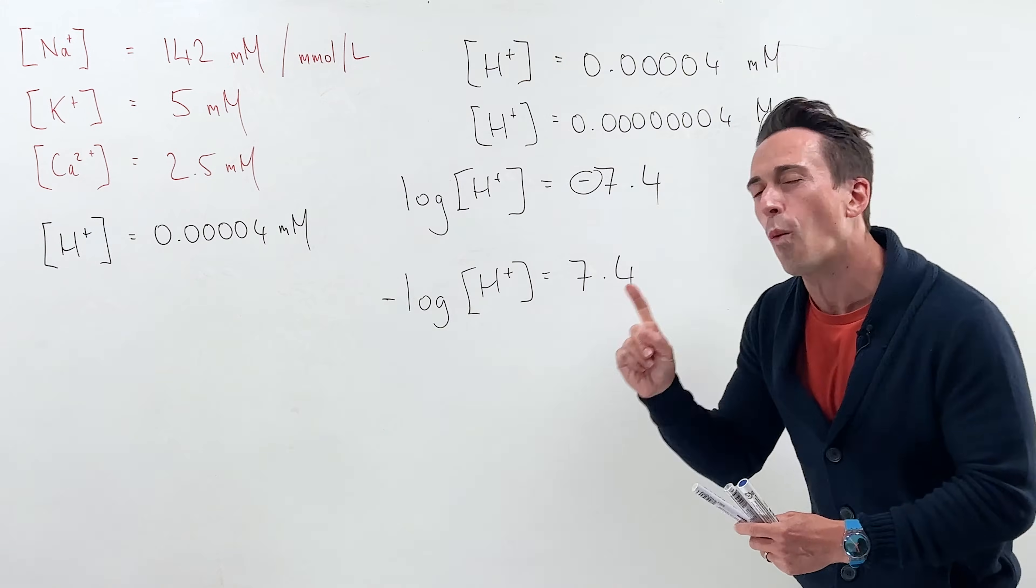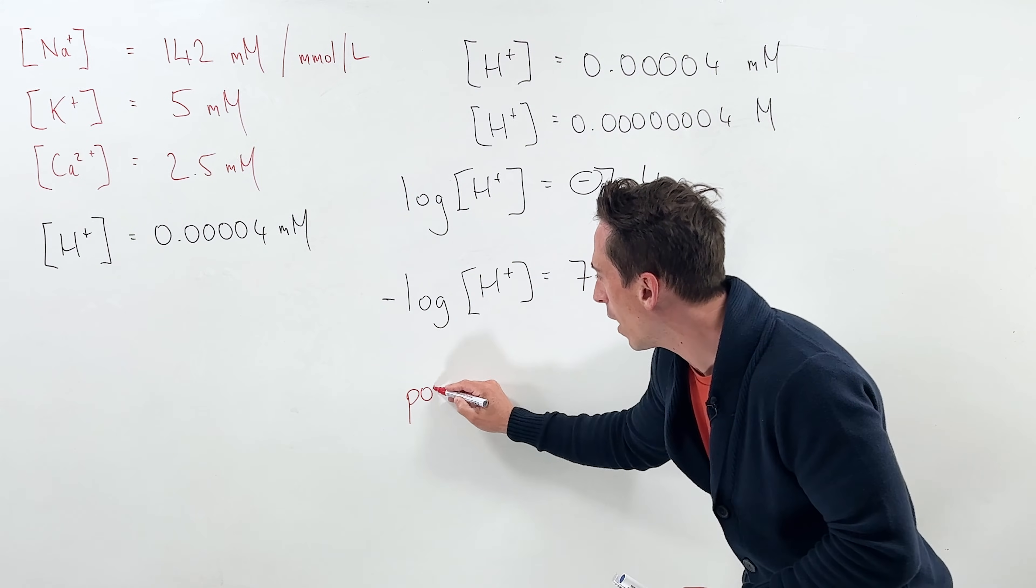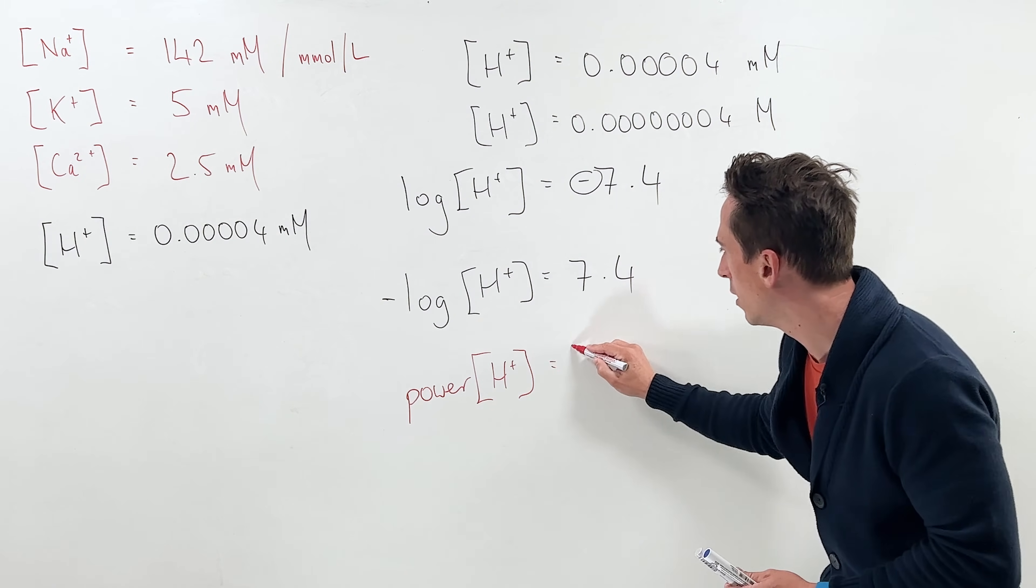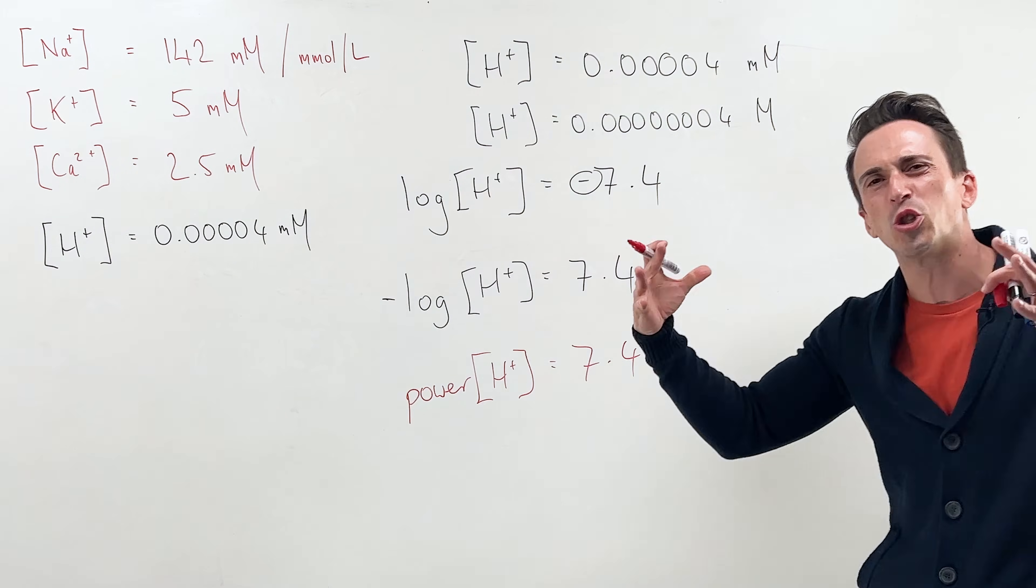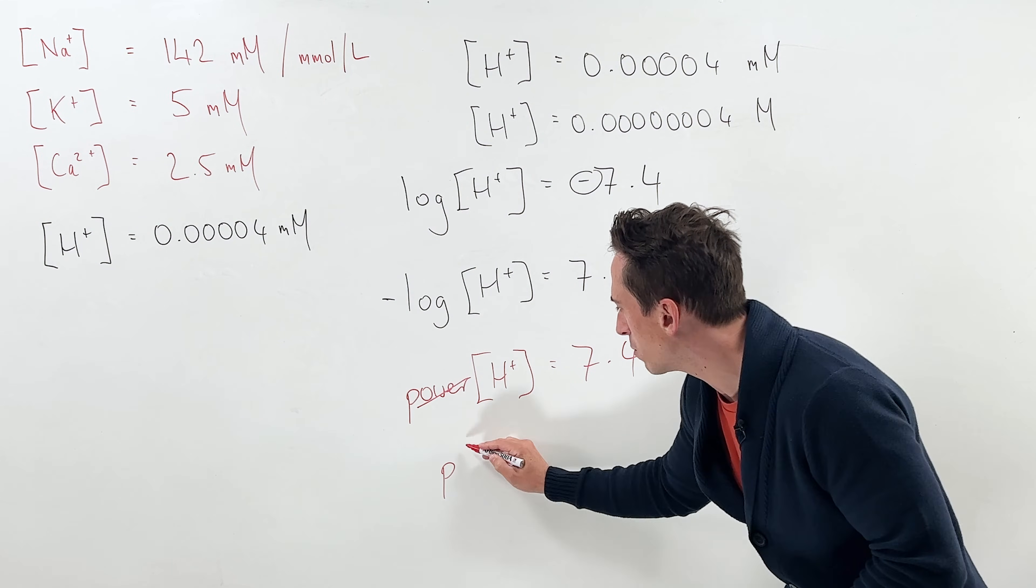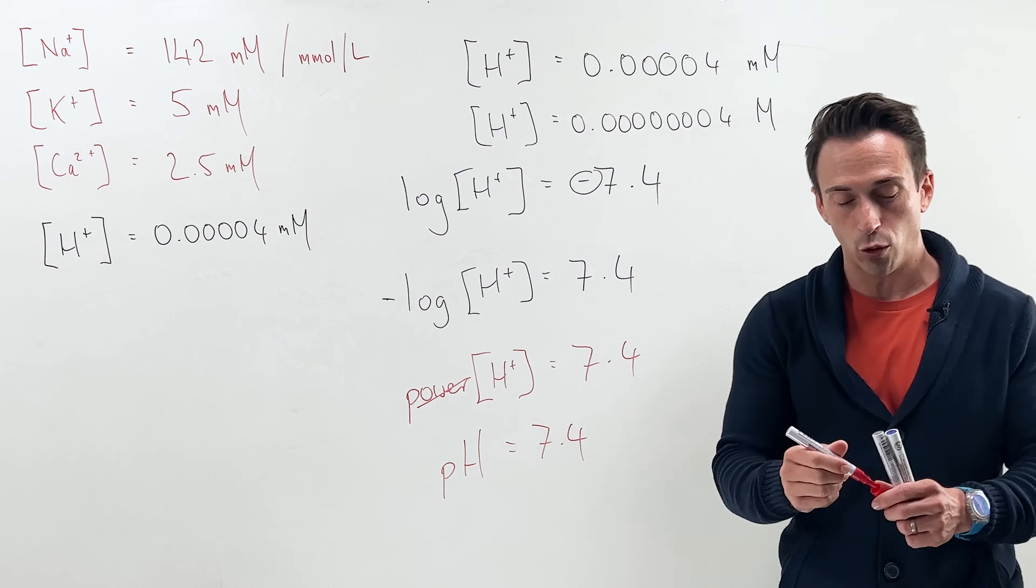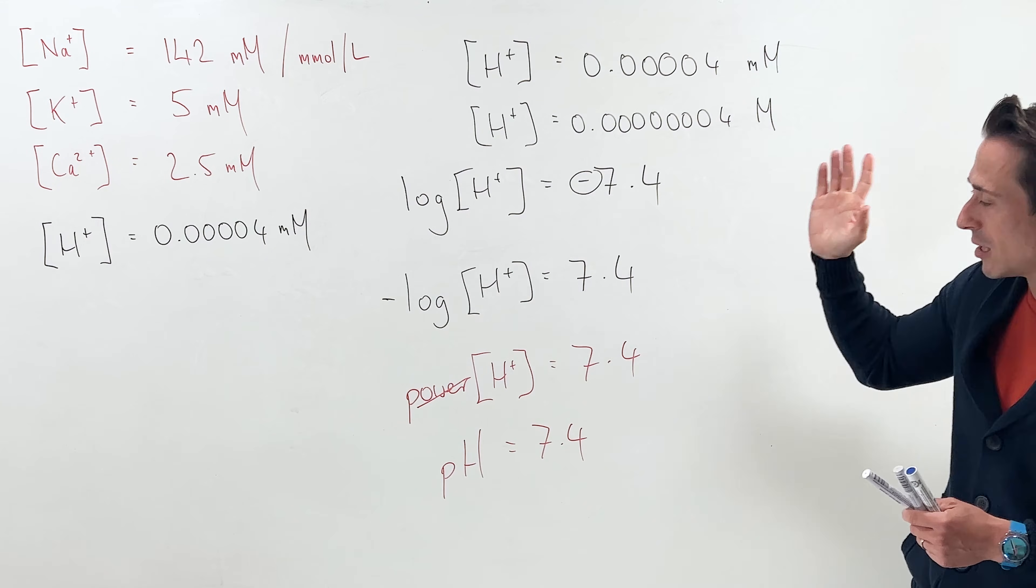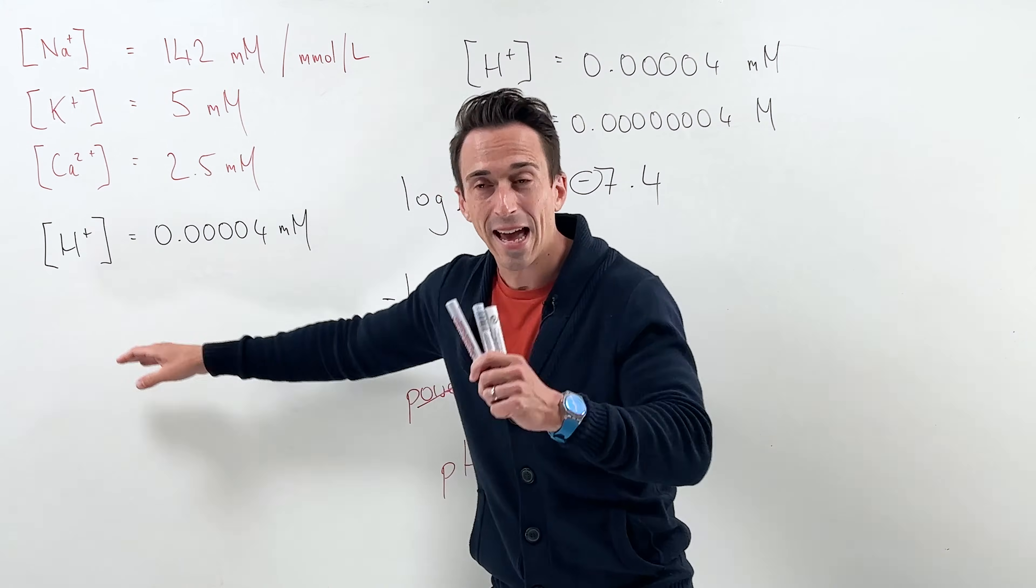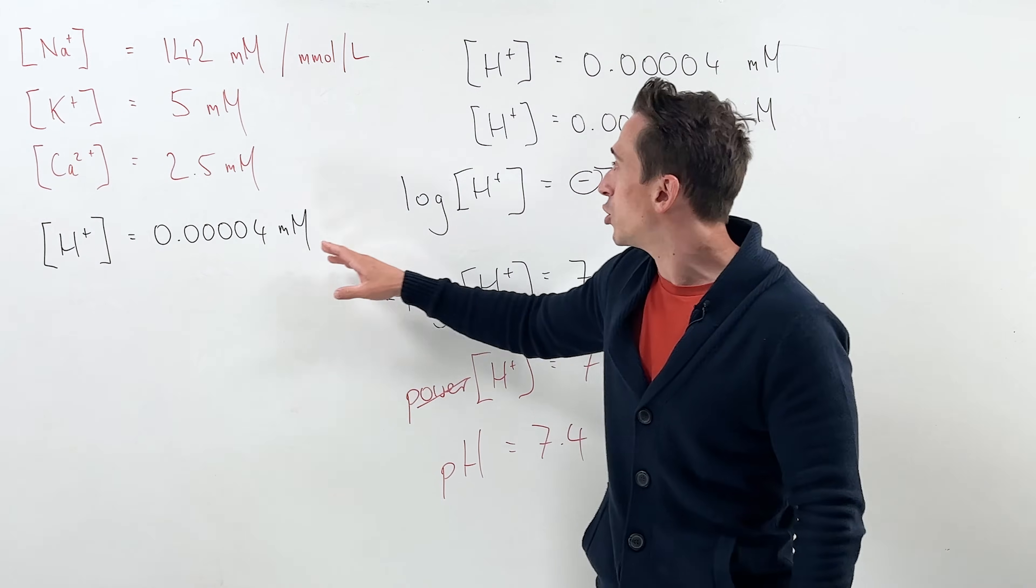And in actual fact, there's another way that you can write the negative log of something. The negative log is just like saying the power of something. So the power of hydrogen ion in your blood is 7.4. And we always like to shorten terms when we can. So what we do is we get rid of that, we get rid of those brackets and we write a small case p, large case H, and the pH of our blood is 7.4. What is this telling us? This is telling us simply that pH is a measure of hydrogen ion concentration in your blood. In actual fact, your pH is the negative log of the hydrogen ion concentration in molar.